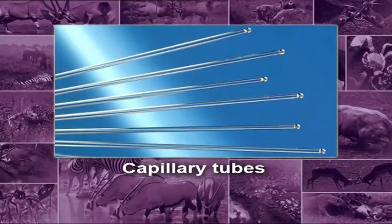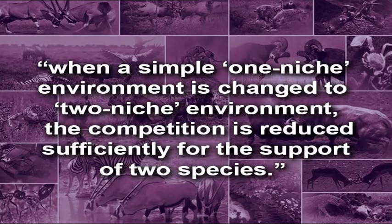Oryzophilus larvae pupate within the grains, thereby escaping from Tribolium. This effect of physical protection for the pupae was demonstrated further by using ground flour to which capillary tubes were added. The Oryzophilus pupated inside the tubes and both populations persisted. Thus when a simple one-niche environment is changed to a two-niche environment, competition is reduced sufficiently for the support of two species.